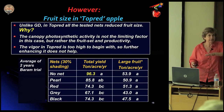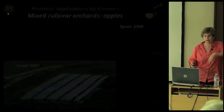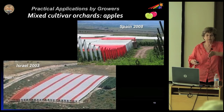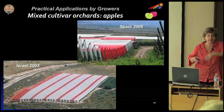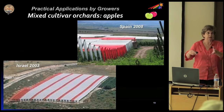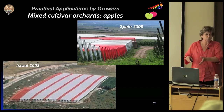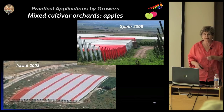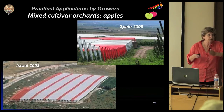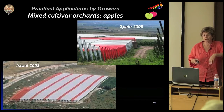As a result, in mixed cultivar orchards of apples, some growers in Israel and Spain ended up covering rows of one cultivar with one optimized net — pearl and red — to fine-tune the outcome of that mixed cultivar orchard.